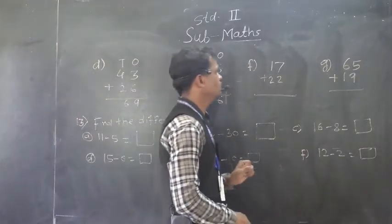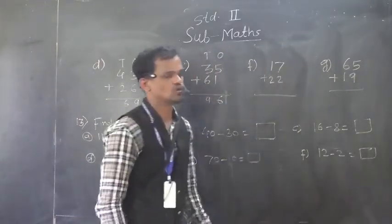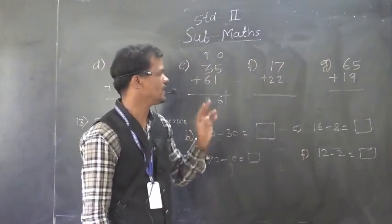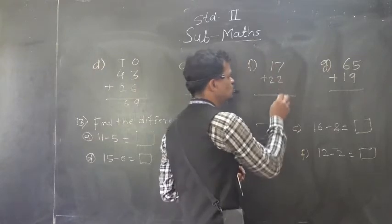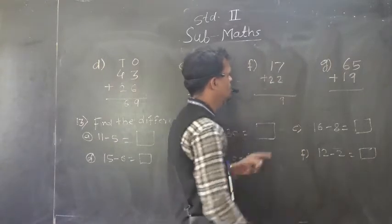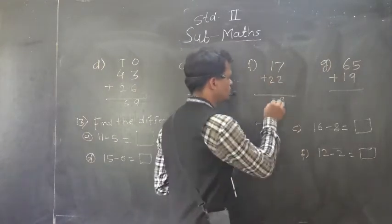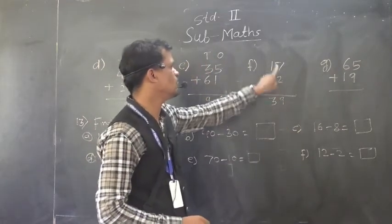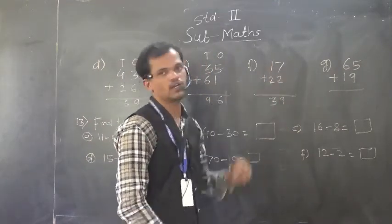Then, F1, 7 plus 2. After 7, count 2 fingers. So, 7, 8, 9. So, 7 plus 2, 9. And, 1 plus 2, 3. So, 39 is the sum of 17 and 22.